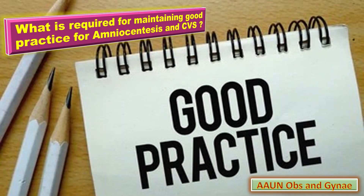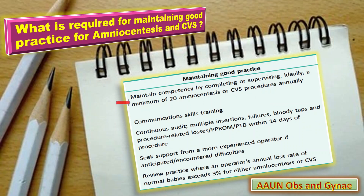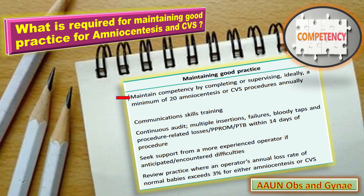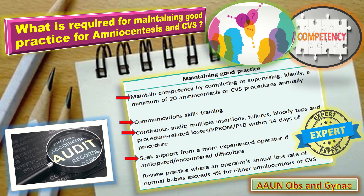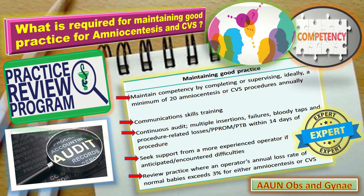What is required for maintaining good practice for amniocentesis and chorionic villus sampling? First, maintain competency by completing or supervising ideally a minimum of 20 amniocentesis or CVS procedures. Second, communication skills training. Third, continuous audit of multiple insertions, failures, bloody taps, and procedure-related losses including PPROM and PTB within 14 days of procedure. Also, seek support from a more experienced operator if difficulty is anticipated or encountered.